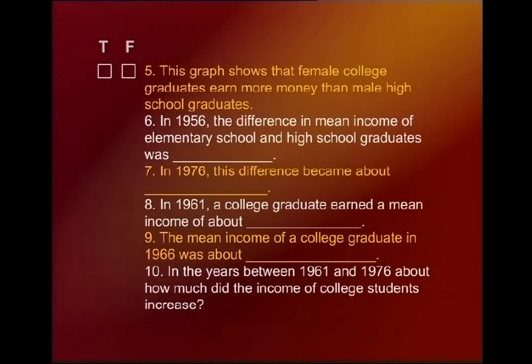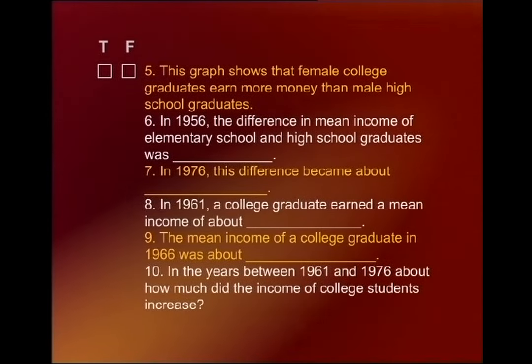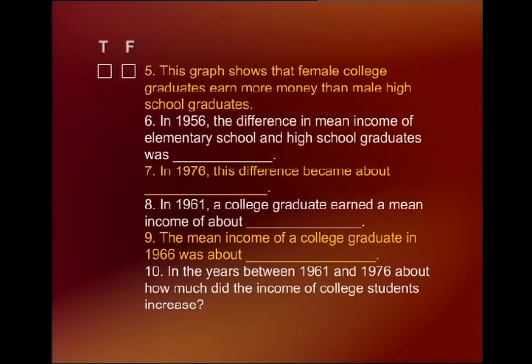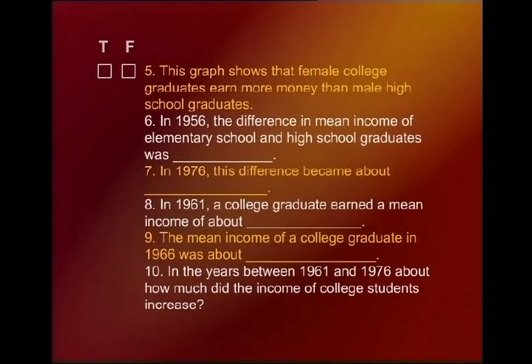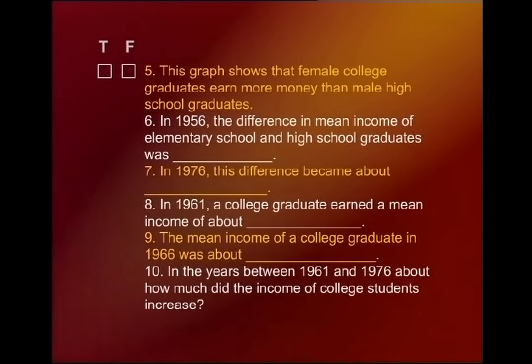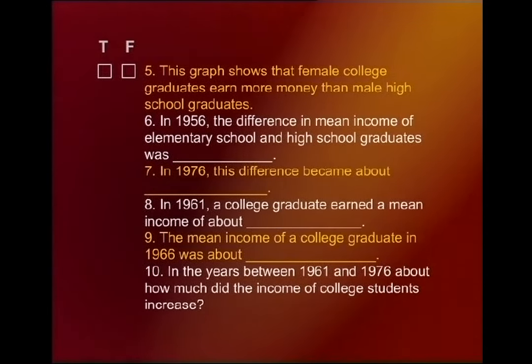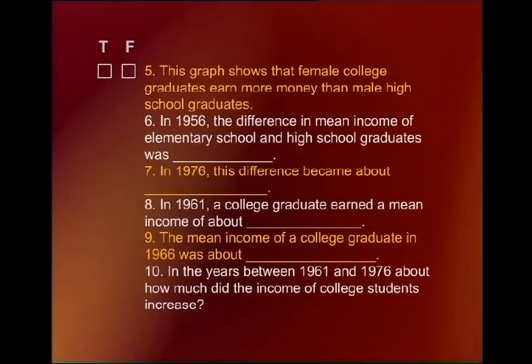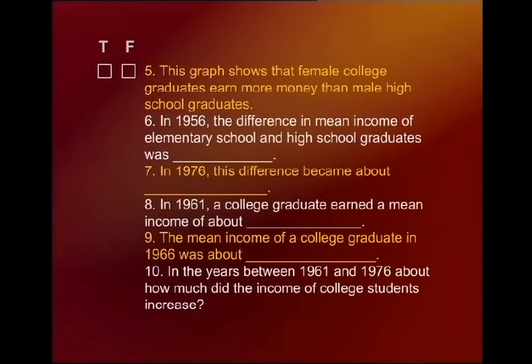Number seven: In 1976 this difference became about $1,720. Number eight: In 1961, a college graduate earned a mean income of about $10,000. Number nine: The mean income of a college student in 1966 was about $12,000.